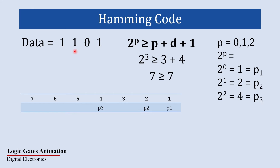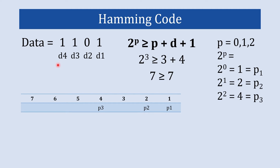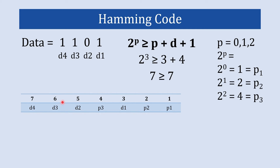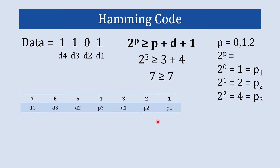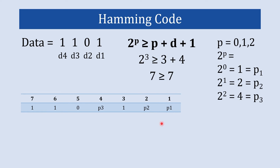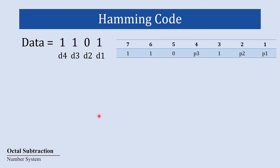Our data bits are labeled d1, d2, d3, and d4. We place them in the remaining blank positions — the LSB goes first, followed by d2, d3, and d4 in order, or alternatively place the most significant bit first. Once data is placed, it is time to calculate the values of the parity bits. Each parity bit checks a specific combination of data bits.